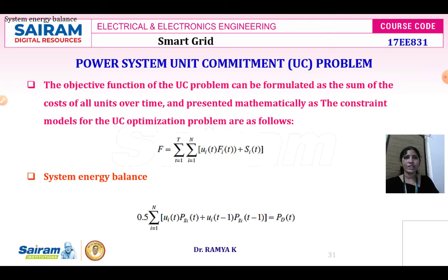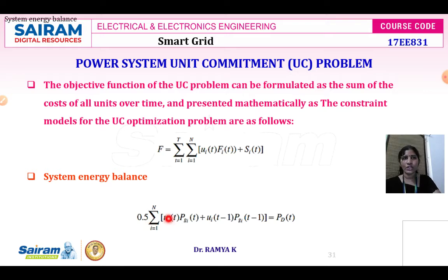Here Pd(t) is the power demand at time t. N is the total number of units in the system. ui(t) is the ratio of generation output to capacity.